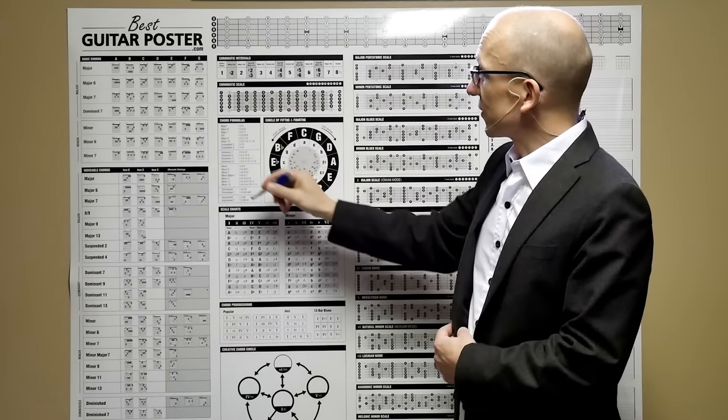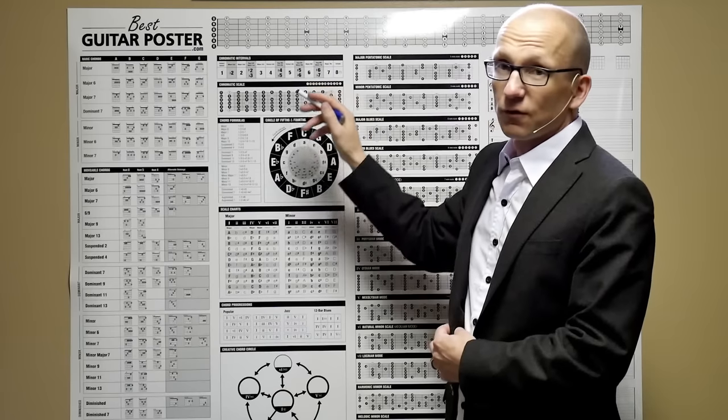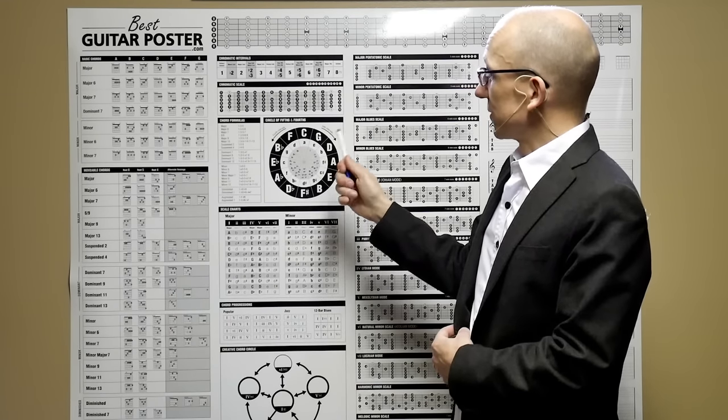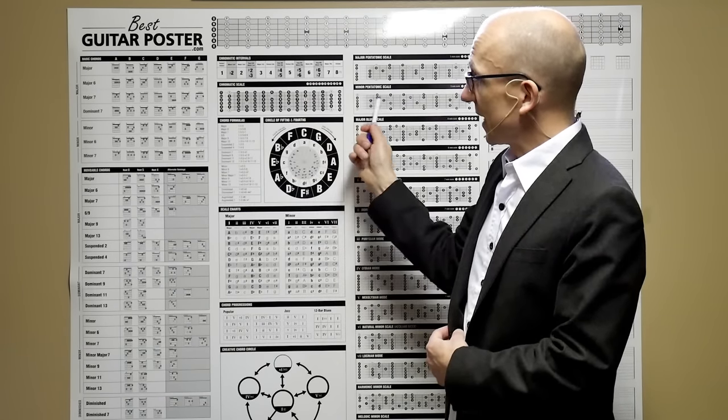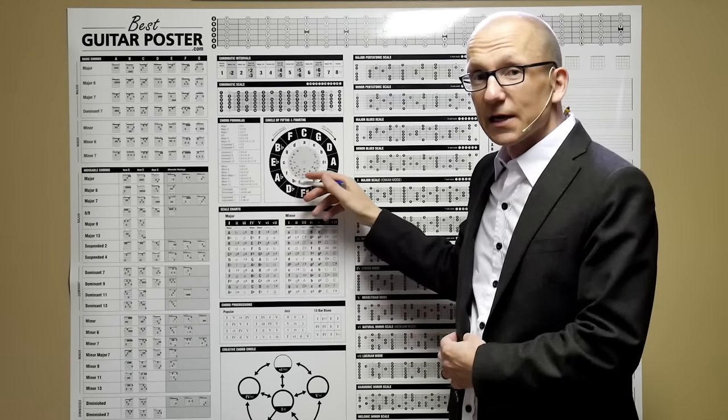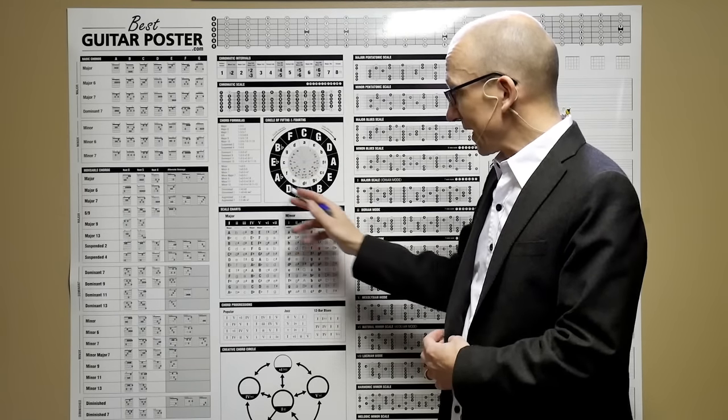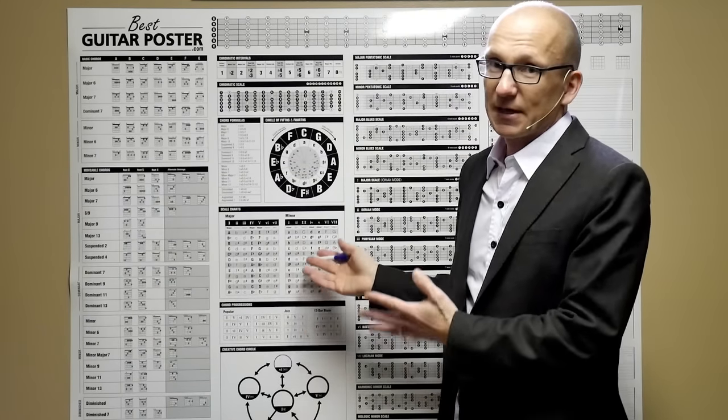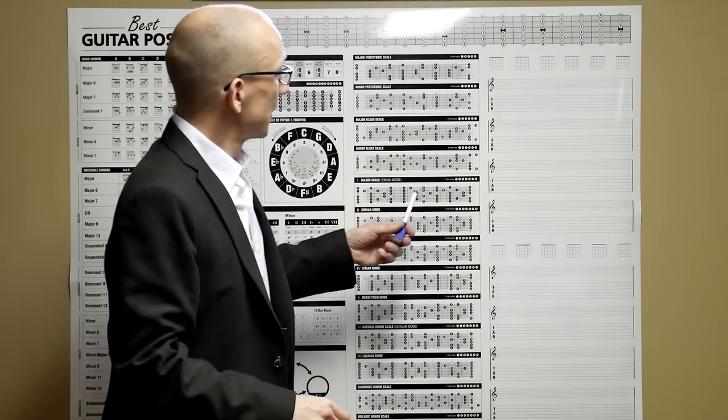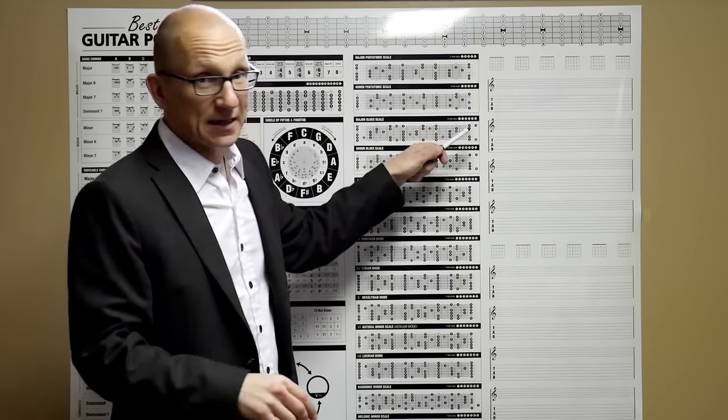and in the center we have some useful music theory information such as the chromatic scale, chord formulas, the circle of fifths, scale charts, chord progressions and more. Then on this side we have a place where we can write tab.